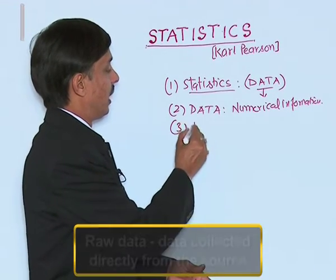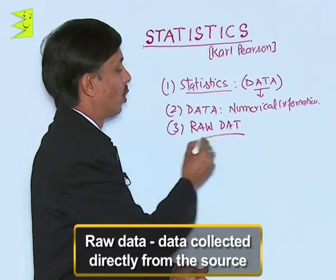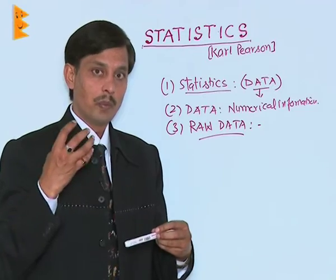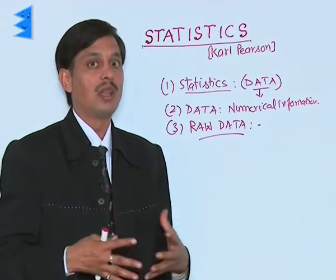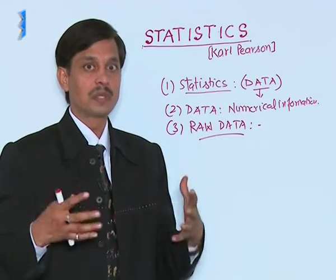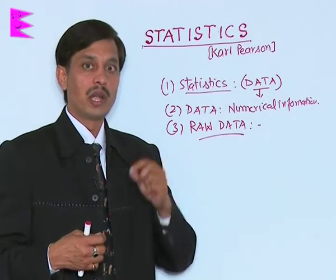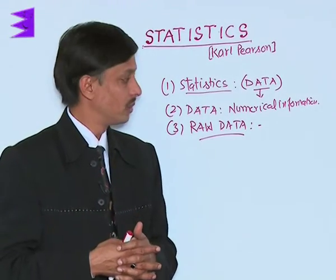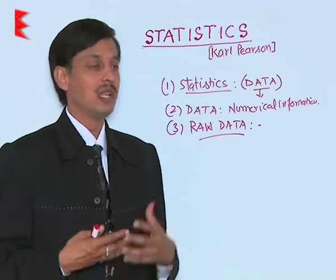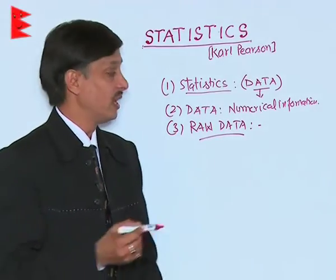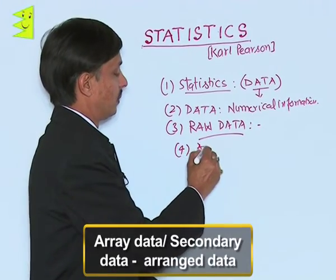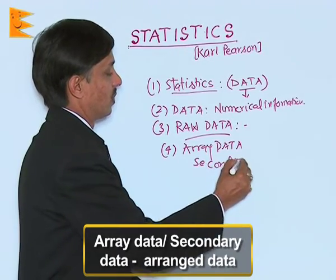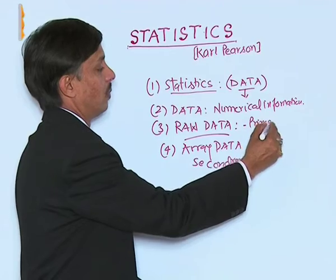Data are of two types. Data collected directly from the source is known as raw data. For example, if a salesman is sent to bring the information about the sale of data — how many Lux soaps have been sold at a particular shop for 30 days of a month — that collection of information by the salesman is raw data. Raw data is also known as primary data.